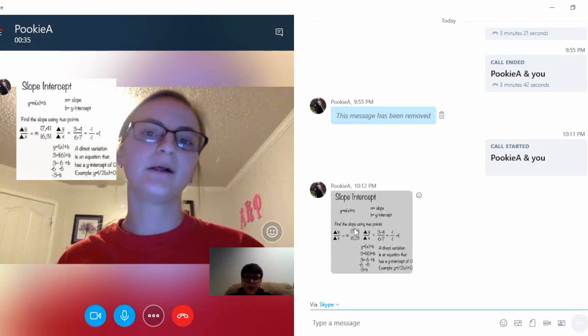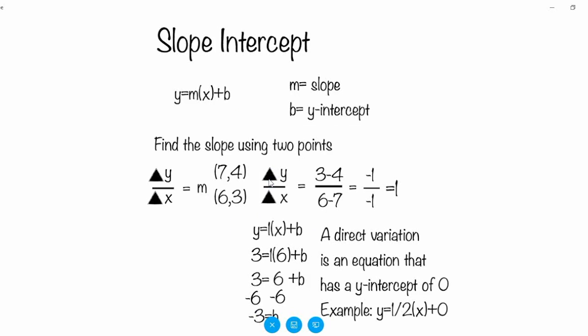Okay, so the equation is y equals mx plus b, and m pretty much represents the slope, and b equals the y-intercept. You can also find the slope using two points, so delta y over delta x. Wait, what's delta?